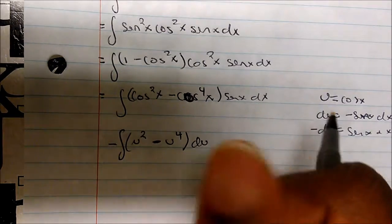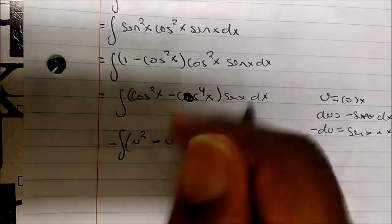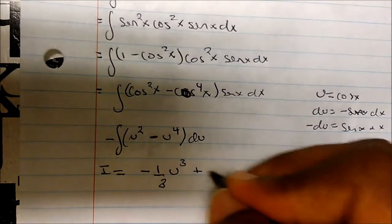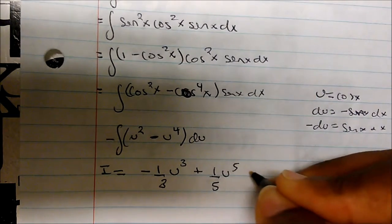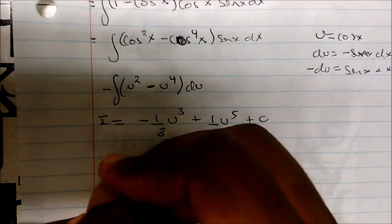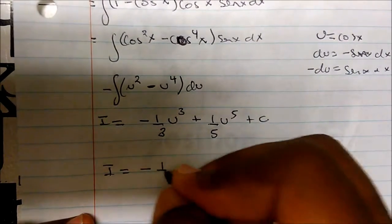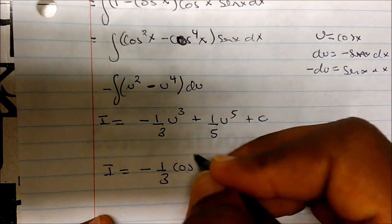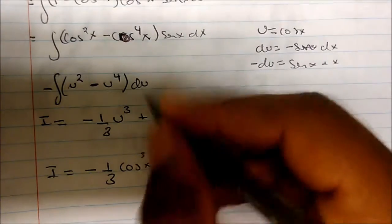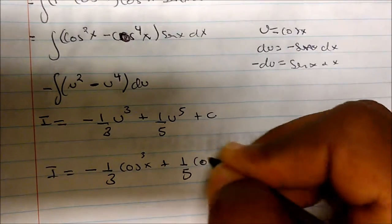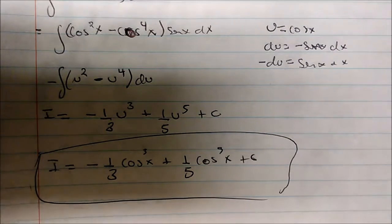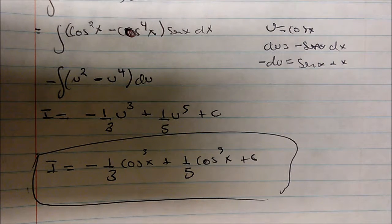Then we replace u with cosines. The negative is being distributed, so when I take my integral, this becomes negative of one-third u cubed plus one-fifth u to the fifth plus C. Substituting back, our integral is negative one-third cosine cubed of x plus one-fifth cosine to the fifth of x plus C. So there's our integral — you can see the general gist here.